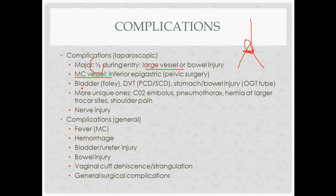Bladder injury risk is reduced by placing the Foley catheter. DVTs are prevented with prophylaxis. Stomach or bowel injury risk is reduced by the OG tube. Pneumoperitoneum-specific complications include CO2 embolus, pneumothorax, hernia at larger trocar sites (which must be closed), and shoulder pain from diaphragm irritation caused by CO2, referred up to the shoulder.